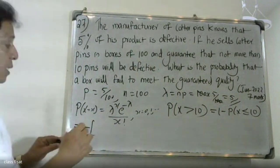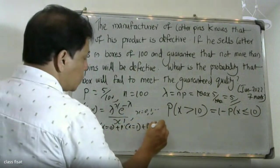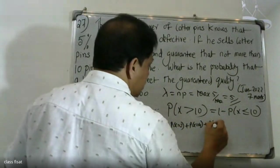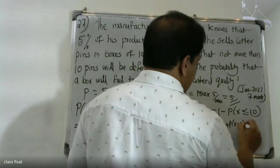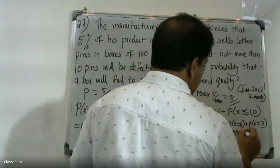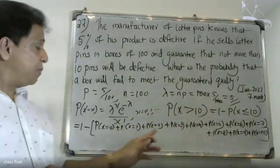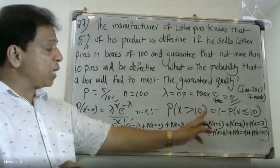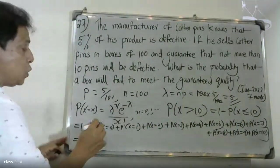P(X > 10) equals 1 minus P(X ≤ 10), which equals 1 minus the sum of probabilities from x equals 0 through x equals 10. That is: 1 minus [P(X=0) + P(X=1) + P(X=2) + P(X=3) + P(X=4) + P(X=5) + P(X=6) + P(X=7) + P(X=8) + P(X=9) + P(X=10)].